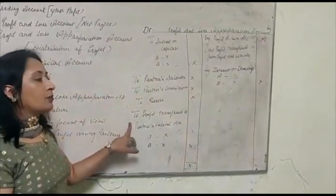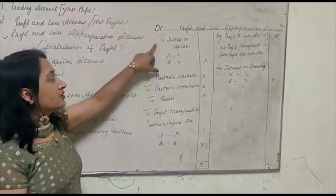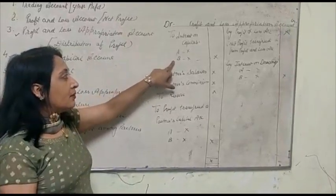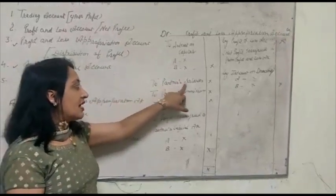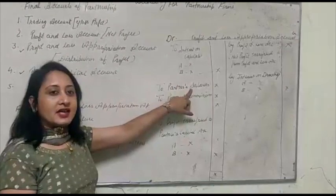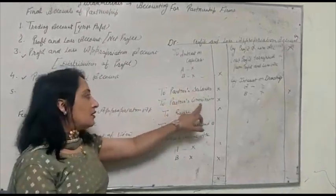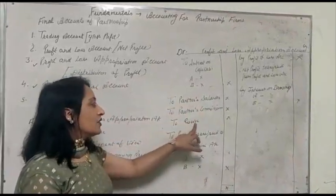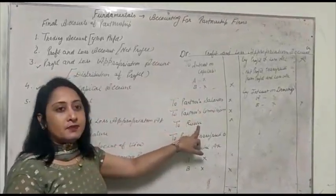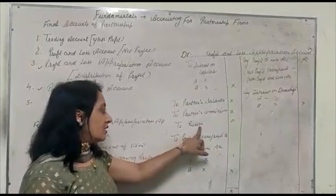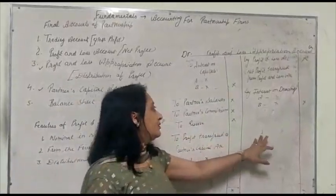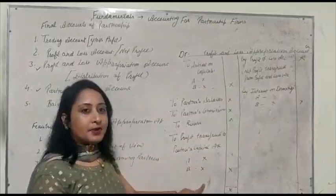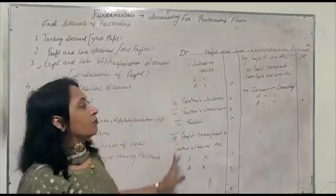Now, the expenses from the firm's point of view shown on the debit side are: interest on capital — assuming two partners A and B; partner salaries, if the firm provides any salary to the partners; partners commission, if the firm provides any commission; reserve, if we want to keep some part of profit as reserve. Any remaining profit is then transferred to the partners capital account.